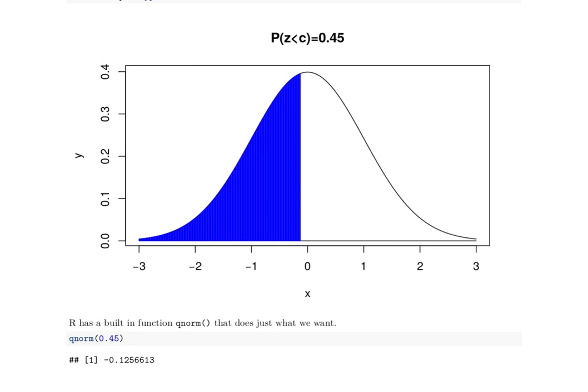The nice thing is that R has a built-in function that does that. Q norm of this area is going to tell us that this is going to be a negative 0.125 and so on. So over here at a negative 0.12566.